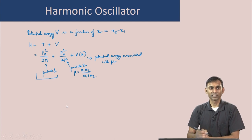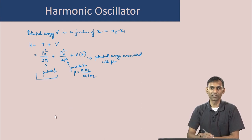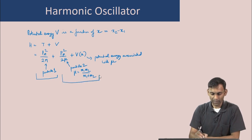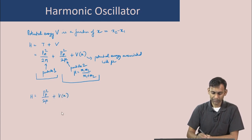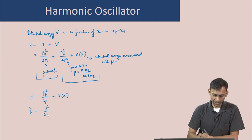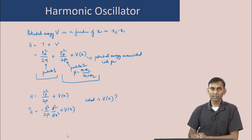The motion of the center of mass has no force acting on it and is therefore just a translation with constant motion, or the two masses may be stationary. The real energy quantization is due to the internal motion, which is the second part of the Hamiltonian. The Hamiltonian of interest is H = p_μ²/(2μ) + V(x), and the quantum mechanical operator form is -ℏ²/(2μ) * d²/dx² + V(x).